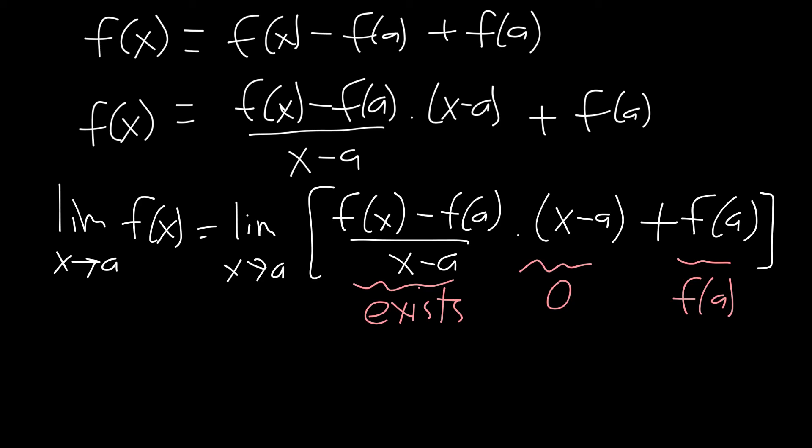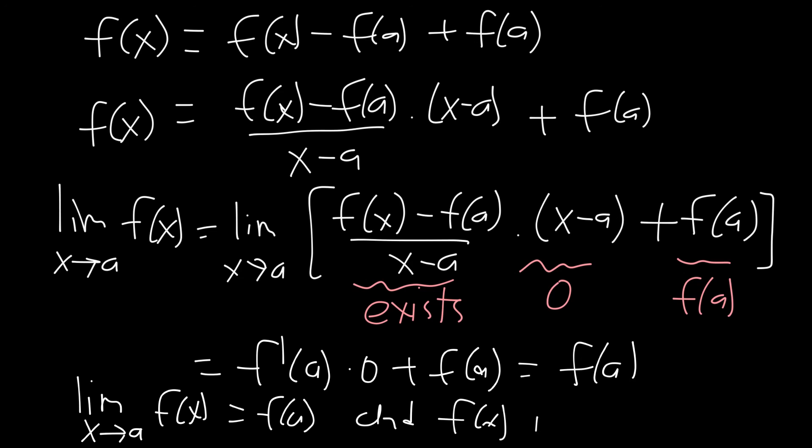So evaluating each part of the limit, we get f prime of a times 0 plus f of a, which is just equal to f of a. So we can say that the limit as x goes to a of f of x equals f of a and f of x is continuous. And that concludes our proof.